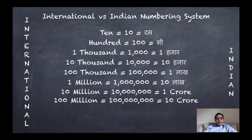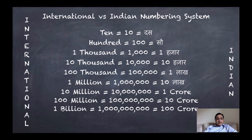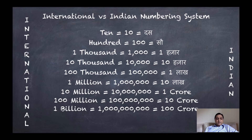100,000,000 is equal to 10 crore. So looking at the individual numbering system, it goes from 1,000 to 1,000,000 to 1,000,000,000. 1,000 has 3 zeros, 1,000,000 has 6 zeros, and 1,000,000,000 has 9 zeros — which is equal to 100 crores in Indian rupees.